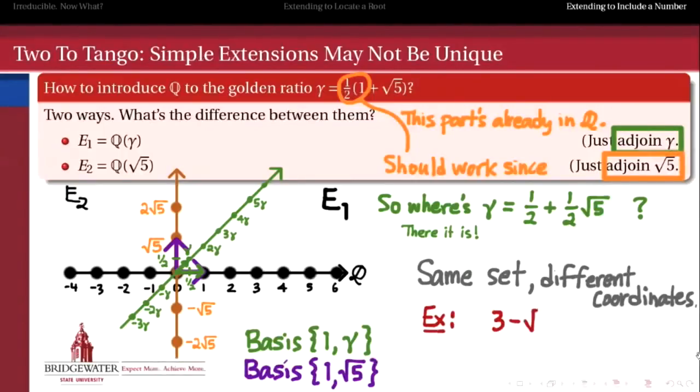So as an example, let's suppose I take the number 3 minus radical 5, which we can locate as that red dot right there. In the purple basis, in other words, the basis on E2, it's fairly simple to see what the coordinates are, 3 and negative 1, because it's 3 times 1 plus negative 1 times radical 5.